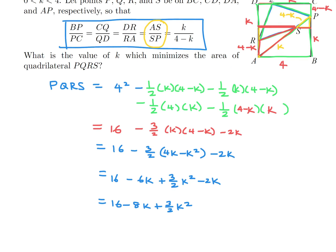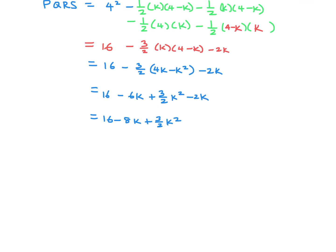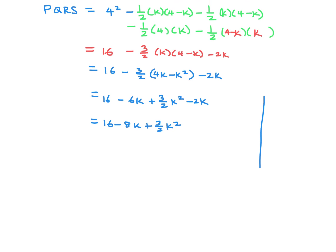We want the minimum value of this expression. Since it's a parabola with a positive coefficient in front of K squared, it opens upward and has a minimum. We need to find the value of K where the minimum occurs, which we do by completing the square.